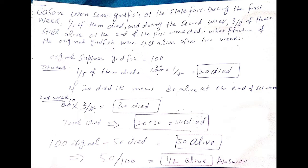First week 100 multiplied by 1/5 of them is 20 died. Next, 100 minus 20 is 80. Then 80 multiplied by 3/8 in the second week is 30. The total is 20 plus 30 which is 50. Now we have to know how many of the original goldfish are alive.